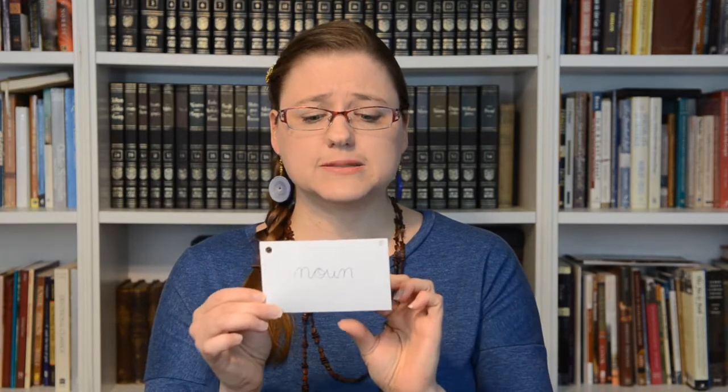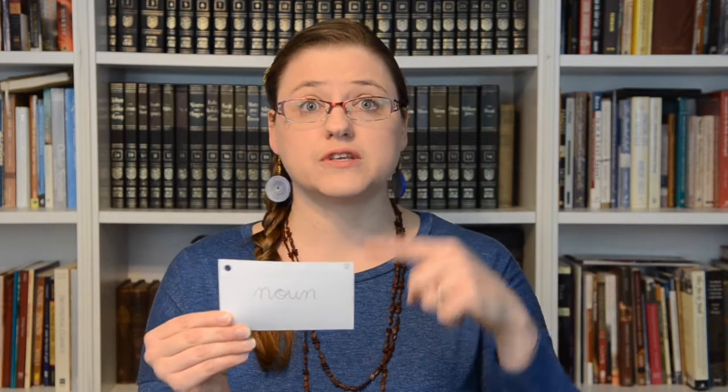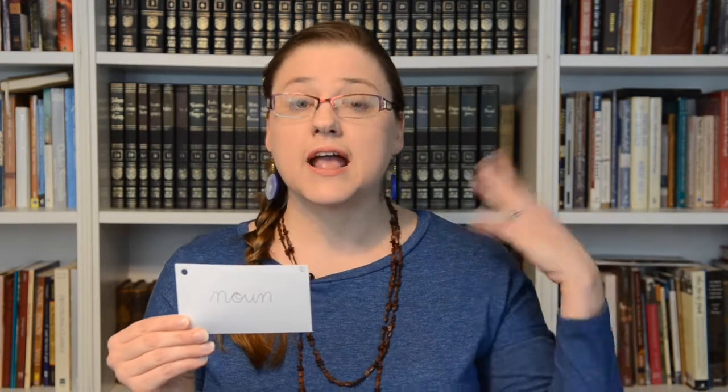I've actually gone further and at the bottom put examples. So on the front of this card we've got 'noun,' then it names a person, place, thing, or idea, and then on the bottom it has examples. Now a student can use this card three different ways — if they look at the front of the card they can ask themselves, do I know the definition?